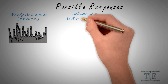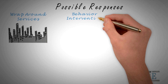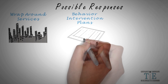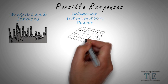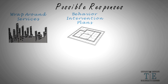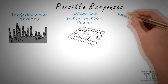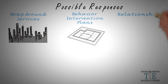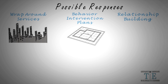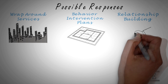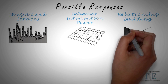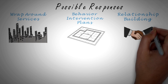Second, behavior intervention plans. Just as instruction is differentiated for students of all different levels of readiness and abilities, behavior expectations should be differentiated as well. Third, relationship building. Teacher-student relationships are arguably one of the most important factors to student success. Look to help teachers form bonds with their students.